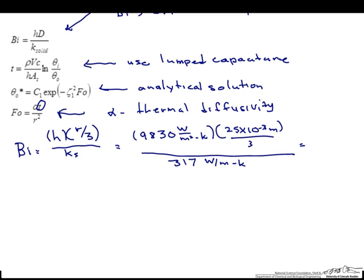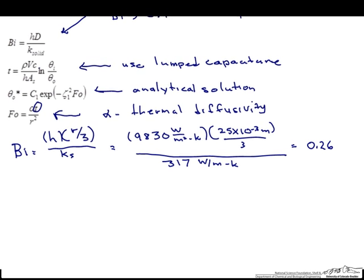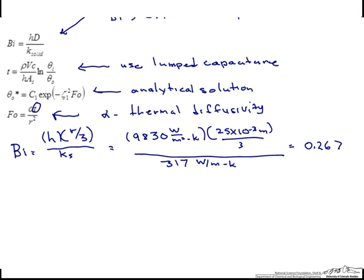And if we calculate that out, we find that this is 0.26, which is greater than 0.1. So this tells us that we should not use lumped capacitance.